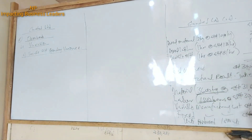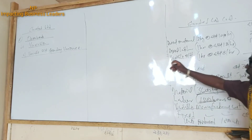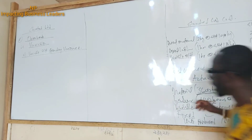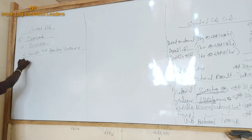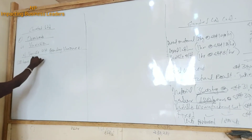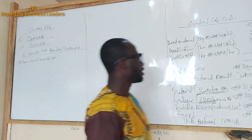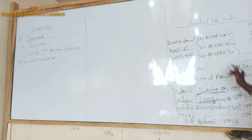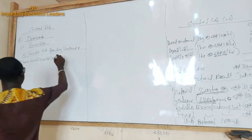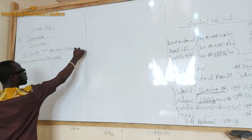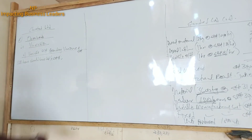Look at what is happening here. We've been given actual variable manufacturing overheads as 11,920. Remember, we were told that the variable overheads is based on labor hours. So to get it, we say our 1,500 hours should have cost us — what is the standard variable overhead rate per hour? It's eight. So 1,500 times eight gives us 12,000.